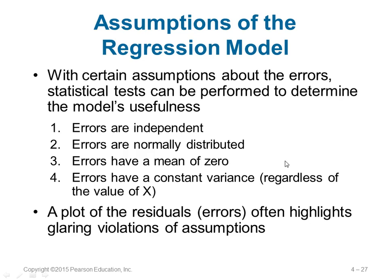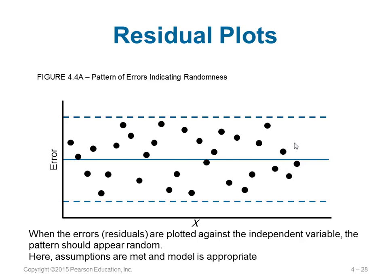There are certain assumptions we need to make for the regression model. These are based on the errors: errors should be independent, errors are normally distributed, errors have a mean of 0, and errors have constant variance regardless of the value of x — if x changes, the variance should remain constant. We can see whether a given scenario violates these assumptions or not. A scenario where the error is randomly distributed and independent meets all assumptions, so we can apply the regression model.